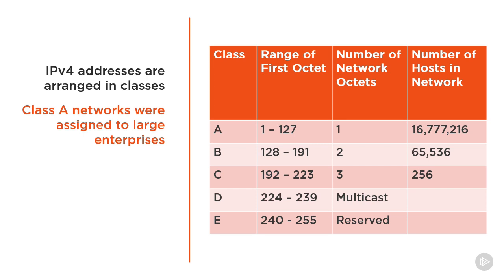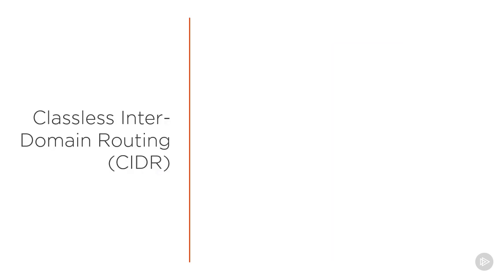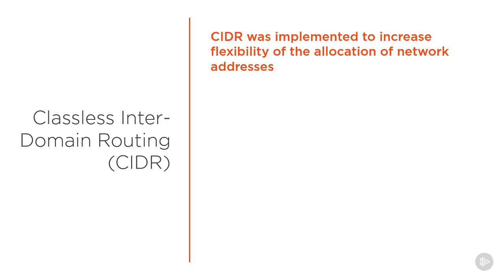If the number of network-capable devices stayed relatively low, then this approach would have worked for longer than it did, but we soon realized that we were running out of addresses and multiple changes were made to manage the growth of devices desiring an IP address. One of those changes was the creation of Classless Inter-Domain Routing, or CIDR for short, which directly aligned to the goal of increasing flexibility in how IPv4 addresses were allocated.